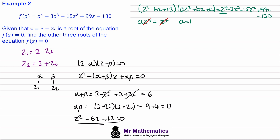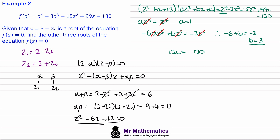For the cubic term, we get negative six a z cubed plus b z cubed must equal negative three z cubed. Since a equals one, negative six plus b equals negative three, so b equals positive three. For the constant term, thirteen c must equal negative one hundred thirty, so c equals negative ten.